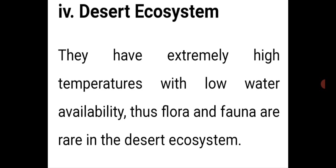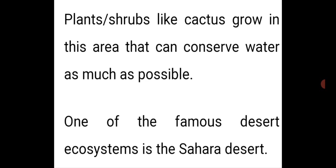To summarize terrestrial ecosystems covered so far: terrestrial ecosystem, forest ecosystem — including tropical evergreen, tropical deciduous, temperate evergreen, temperate deciduous, and boreal (taiga) forests — then grassland ecosystems including savannahs, temperate grasslands, and tropical grasslands, then mountain ecosystem, and desert ecosystem. In the desert ecosystem, plants and shrubs like cactus grow and can conserve water. One of the famous desert ecosystems is the Sahara Desert.